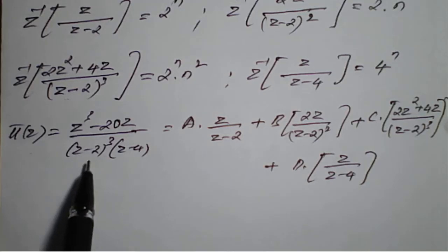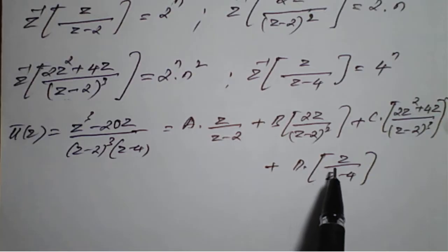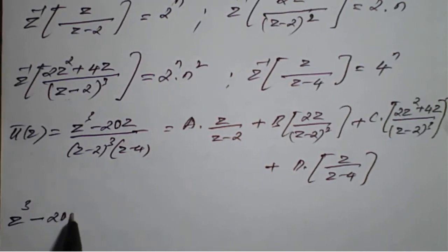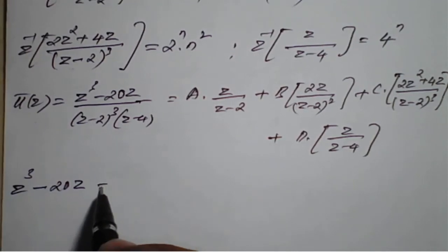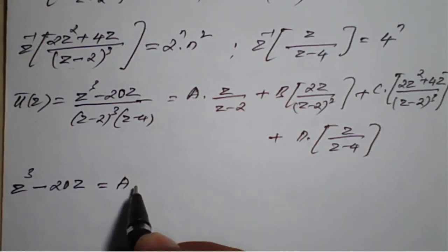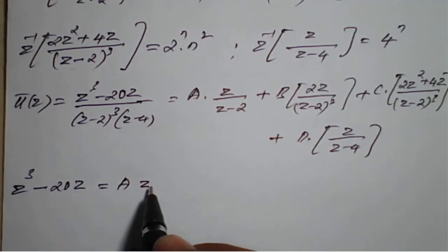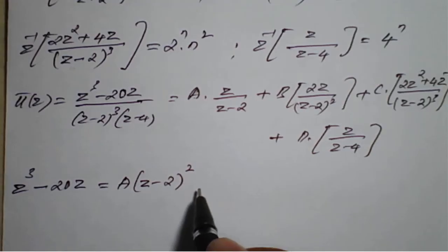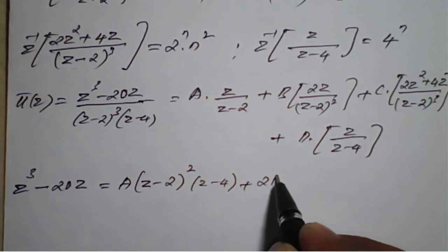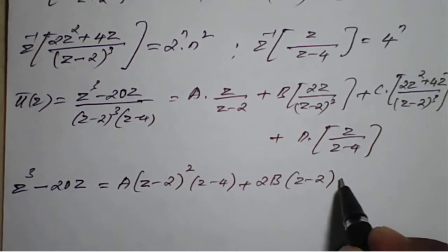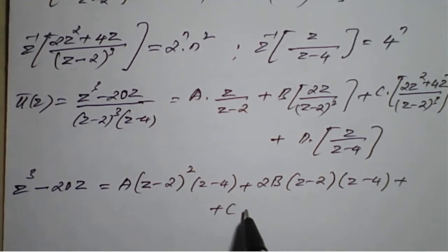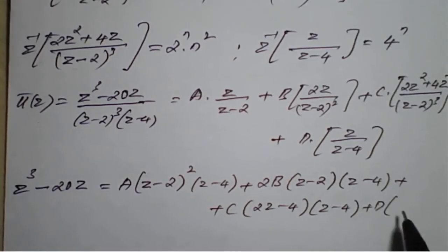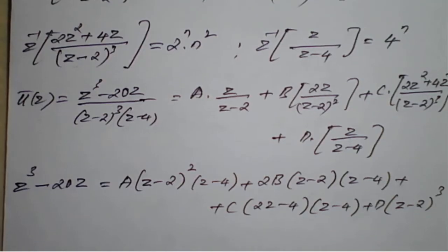Taking LCM as (Z-2)³(Z-4) on both sides, our equation becomes: Z³ - 20Z = A·(Z-2)²·(Z-4) + 2B·(Z-2)·(Z-4) + C·(2Z-4)·(Z-4) + D·(Z-2)³. Taking LCM and simplifying gives this expression.